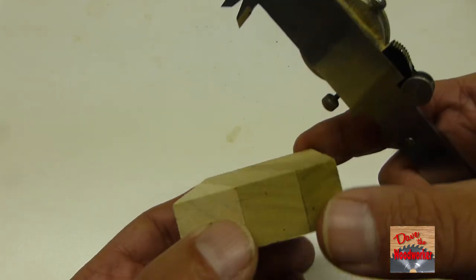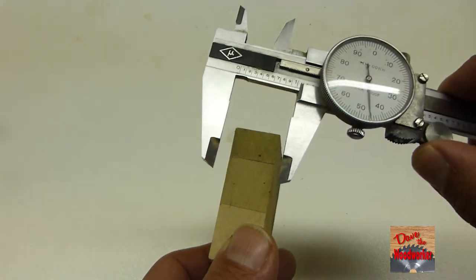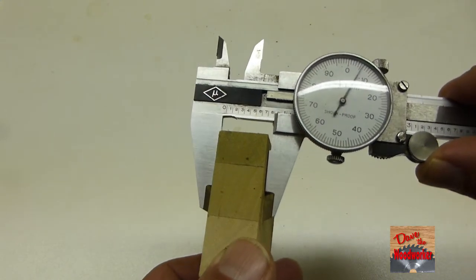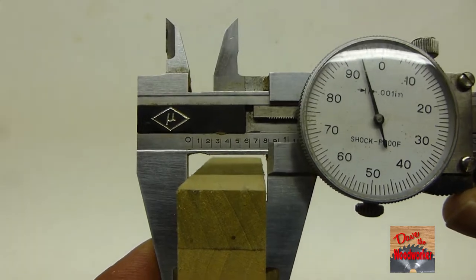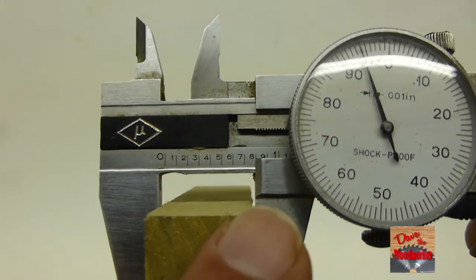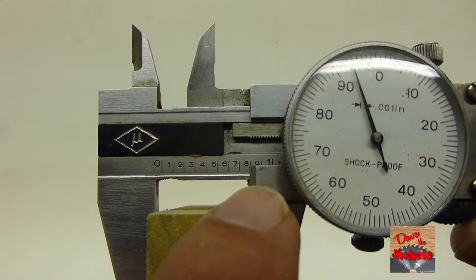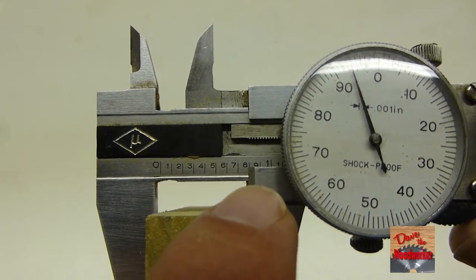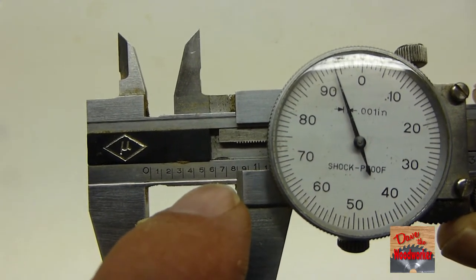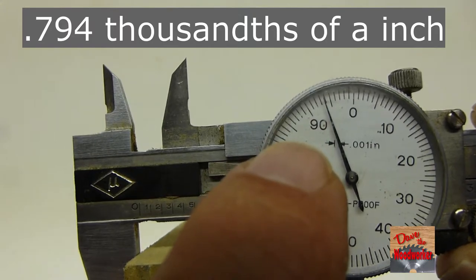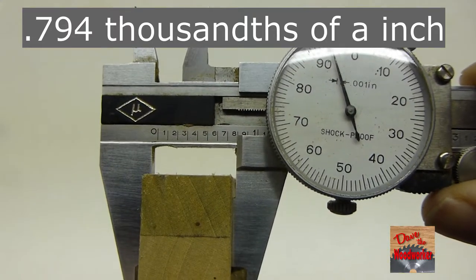If you want to measure the thickness of wood, open it up again, then we close it. And you can see here, you count the numbers over. Now if you notice, it's real close to the eight, but it's not on it. It's just a little bit off. So it's seven hundred ninety-four thousandths. So that's how thick this wood is right here.